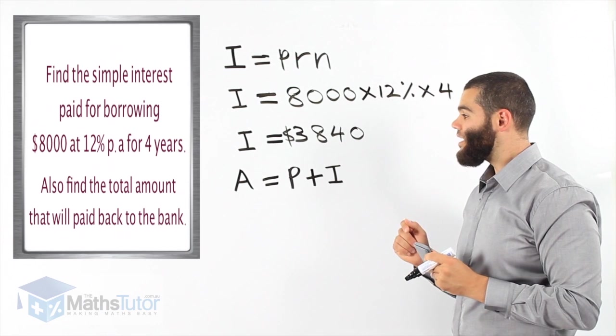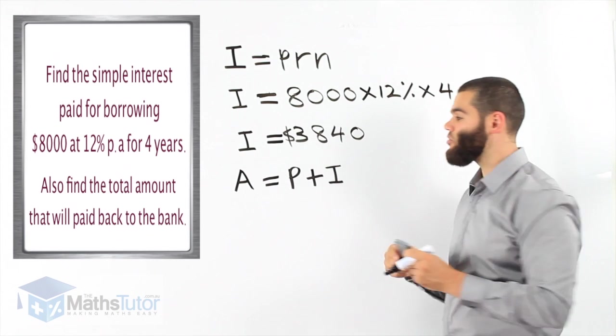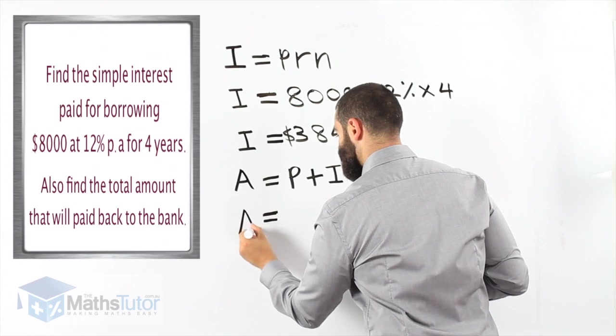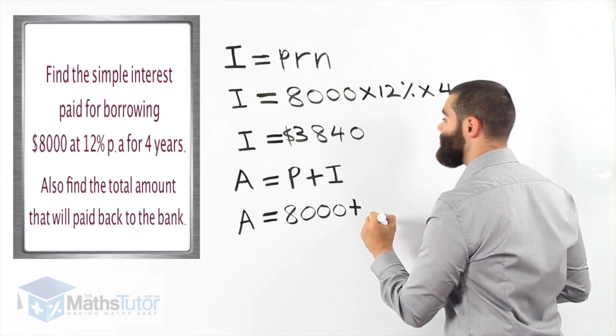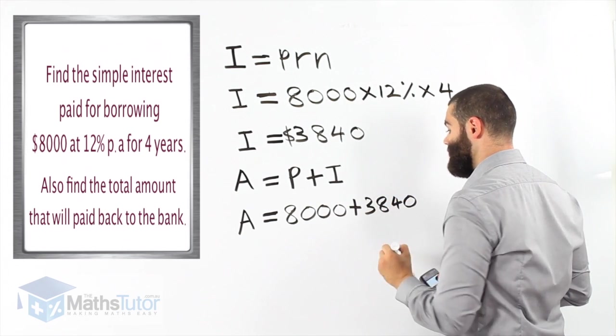So, all together, they're going to pay back the $8,000 plus interest on top. 8,000 plus $3,840.